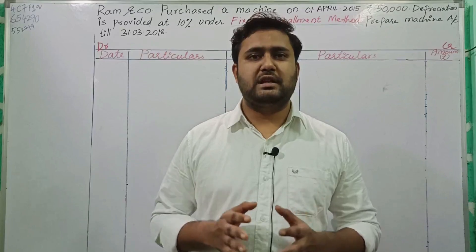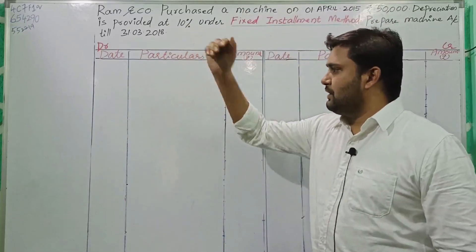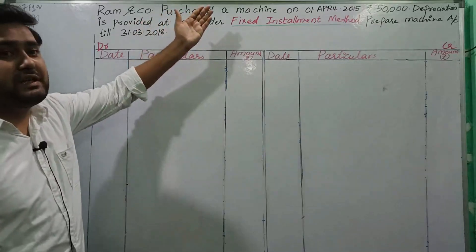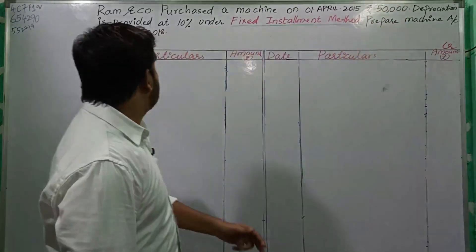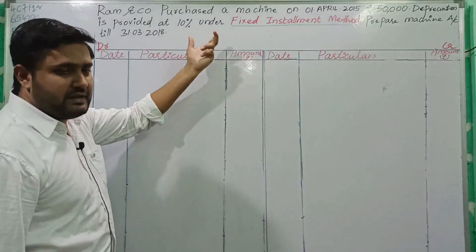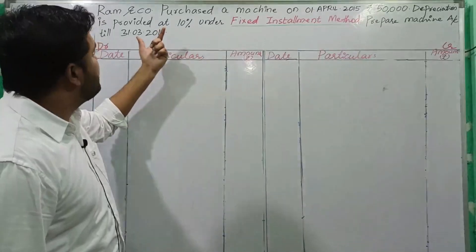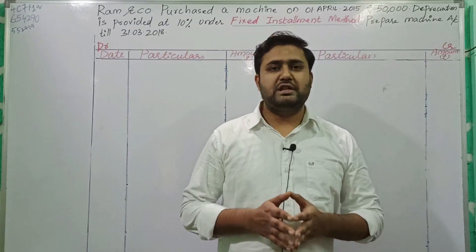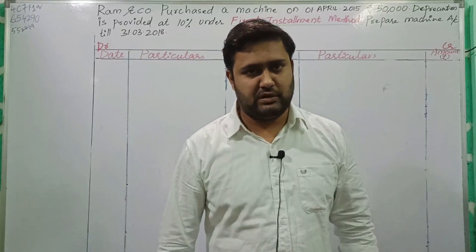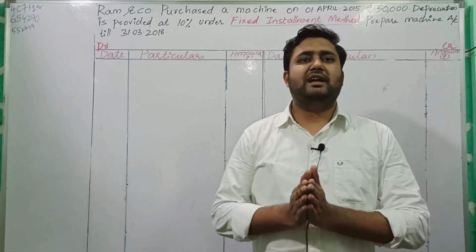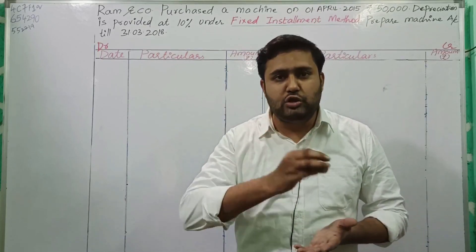Hello everyone, today we are going to discuss a problem on depreciation. The question is: Ram and Company purchased a machine on 1st April 2015 for rupees 50,000. Depreciation is provided at 10% under the fixed installment method. Prepare the machine account till 31st March 2018. After reading the question, there are three major concepts you need to adopt.